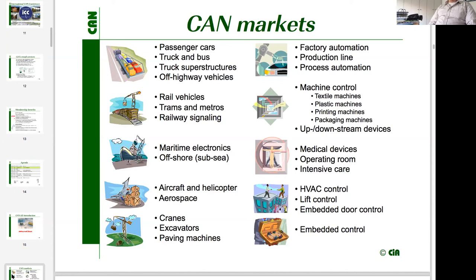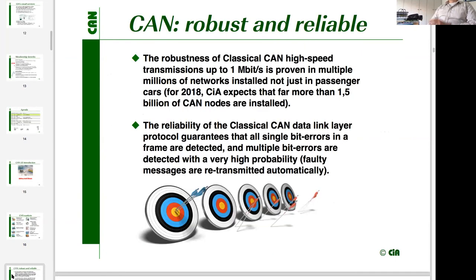The market leader in embedded door control systems uses the CAN bus for controlling turnstiles and entrance doors. In commercial vehicles, off-highway vehicles, cranes, and excavators, CAN is the dominating network. We also see CAN in aircraft, helicopters, maritime applications, and railways. CAN has made its way into all application fields — it is very robust and reliable.